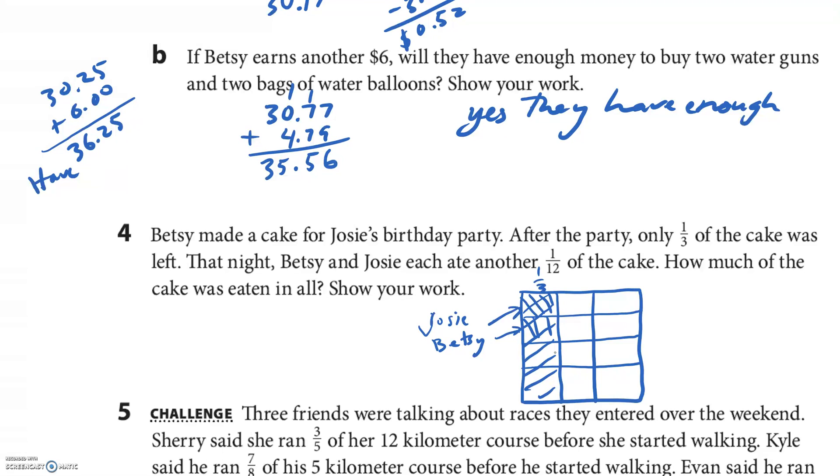So they're gonna eat this one—gone. That one's gonna be—um, Josie—I guess Josie would be a capital J. And this one's gonna be Betsy. That one's gone. So what's left? 2/12 left, which is equal to 1/6 left.